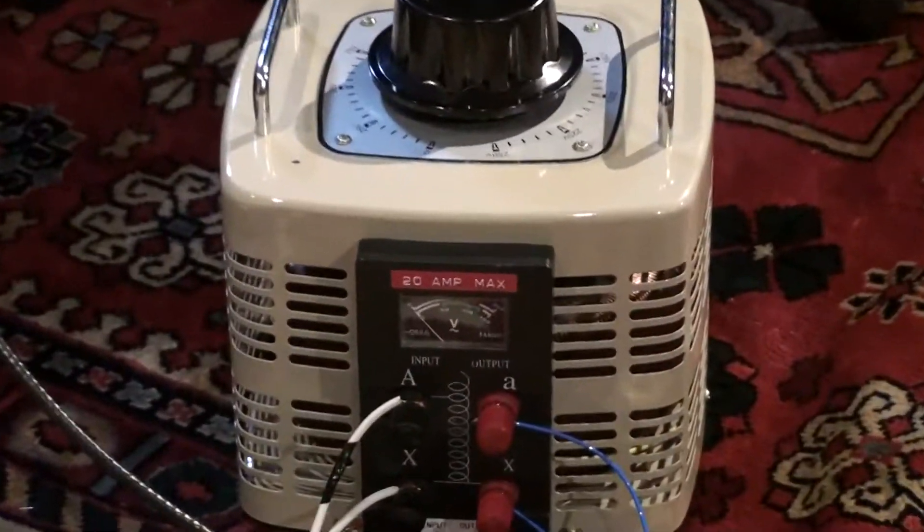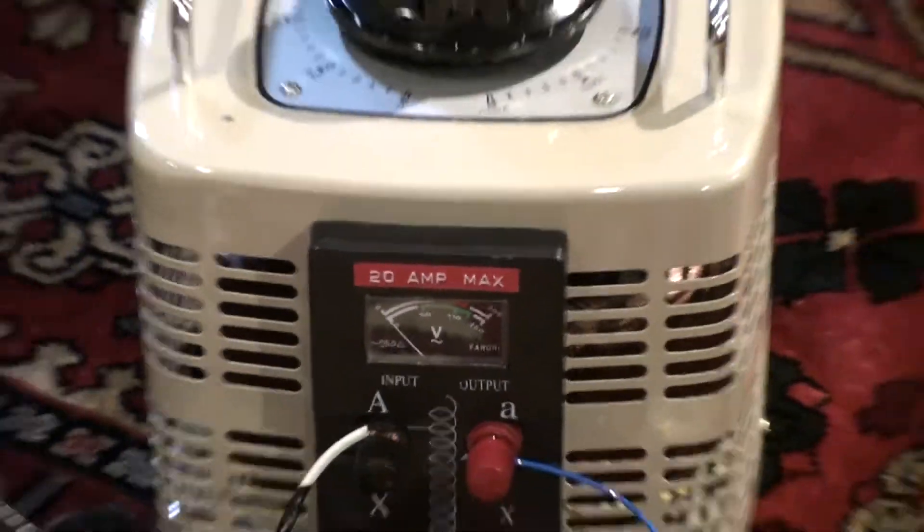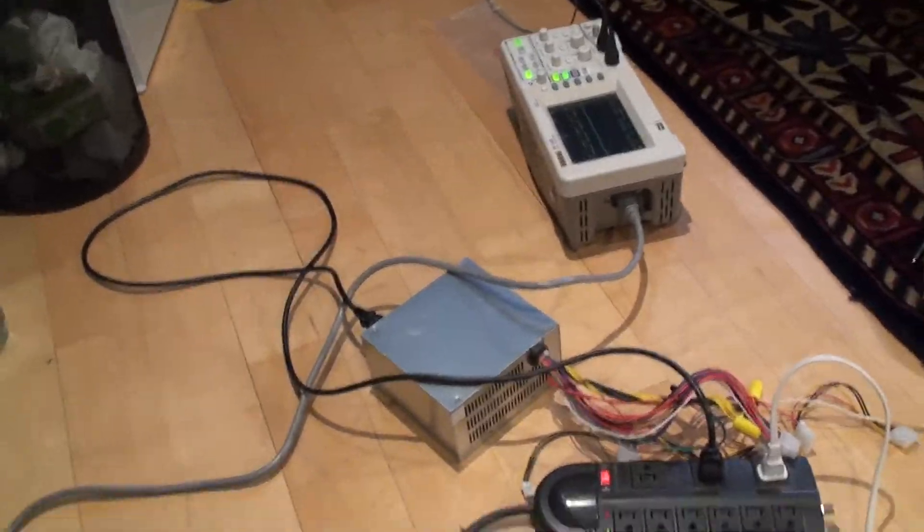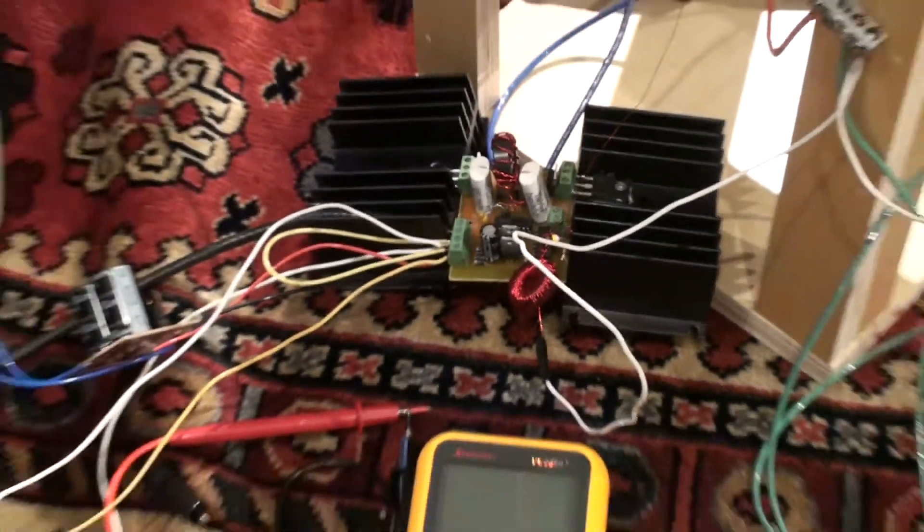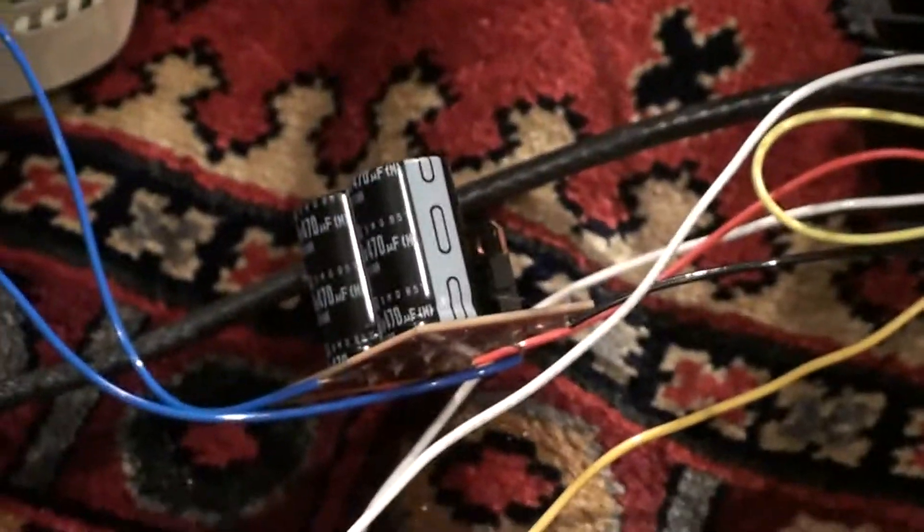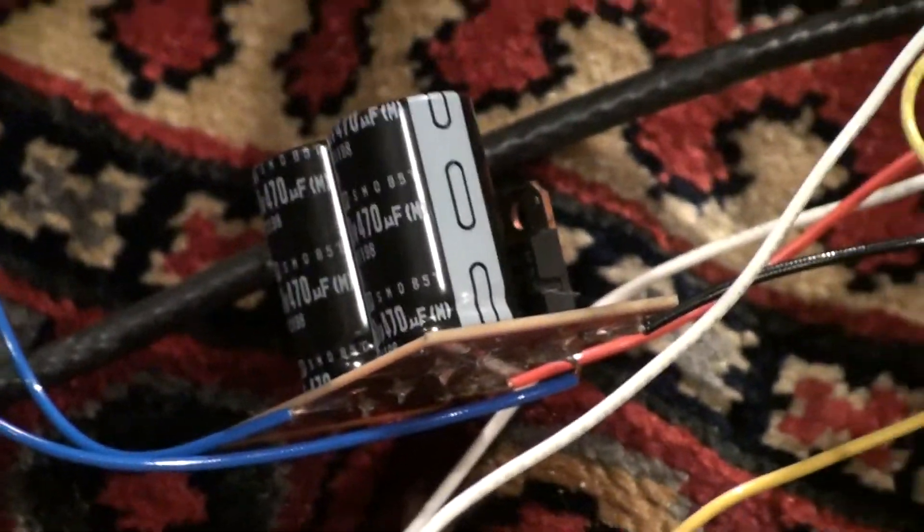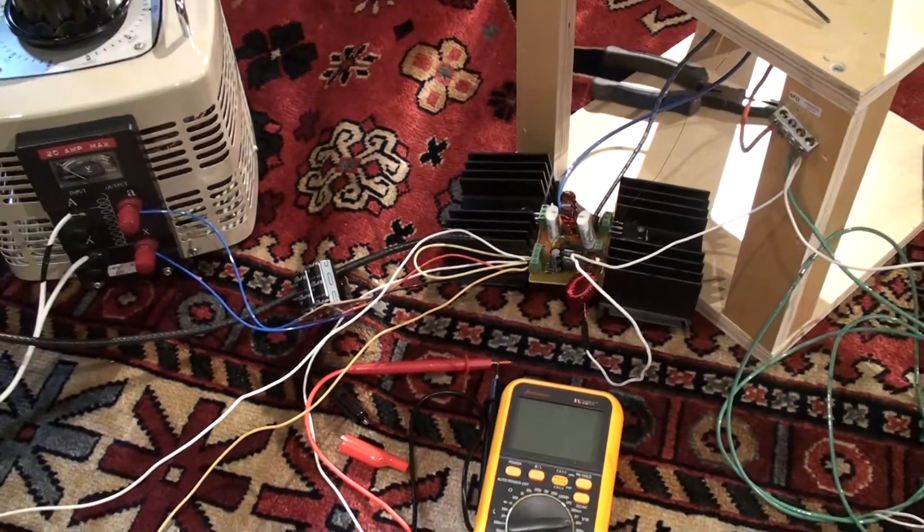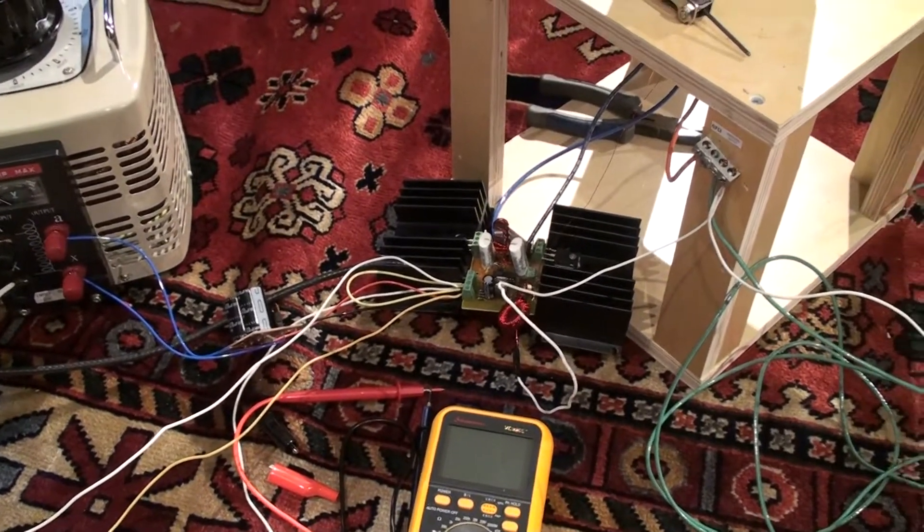There's my Variac, 20 amp Variac. Spent a good amount of money on that, so pretty happy with that purchase. So I have a 12 volt PC power supply powering the low side of the driver board. I also have a voltage doubler designed and assembled by Killa X. So basically I had the idea and he helped me make it into reality. Great guy.